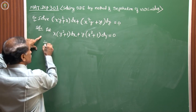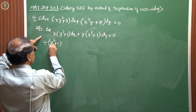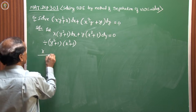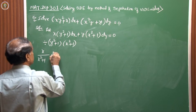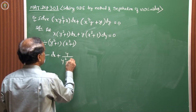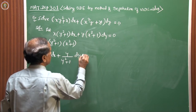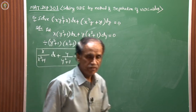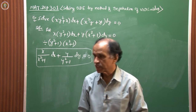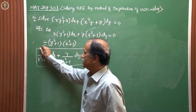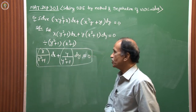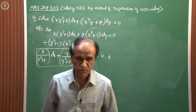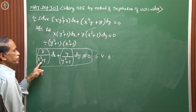Dividing throughout by (y² + 1)(x² + 1) to separate variables: [x/(x² + 1)]dx + [y/(y² + 1)]dy = 0. This is now in separated variable form — the first term contains only x, and the second term contains only y. The step is ready for integration.